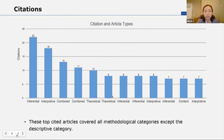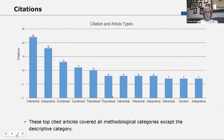This is the citation and article types chart. The top article had 22 citations, and we charted them down through the ones that had seven citations. What we found interesting is that all the types of articles were located within these top cited articles except for the descriptive category.